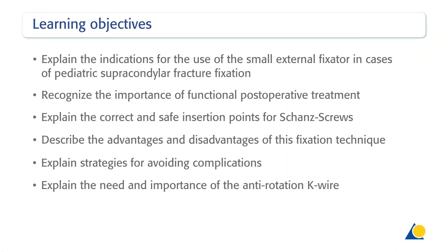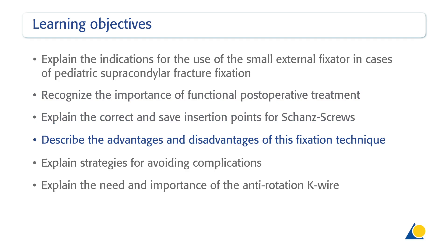Upon completion of this exercise, you should be able to: explain the indications for the use of the small external fixator in cases of paediatric supracondylar fracture fixation; recognise the importance of functional postoperative treatment; explain the correct and safe insertion points for shunt's screws; describe the advantages and disadvantages of this fixation technique; explain strategies for avoiding complications; and explain the need and importance of the anti-rotation K-wire.